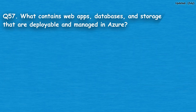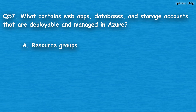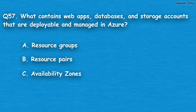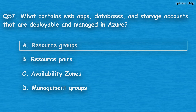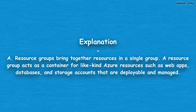Question number 57: What contains web apps, databases, and storage accounts that are deployable and managed in Azure? Option A: resource groups, option B: resource pairs, option C: availability zones, option D: management groups. The correct answer is option A, resource groups. Resource groups bring together resources in a single group and act as a container for like-kind Azure resources such as web apps, databases, and storage accounts that are deployable and managed.